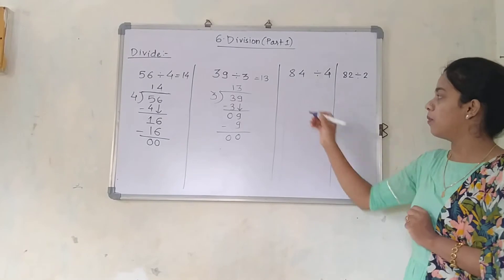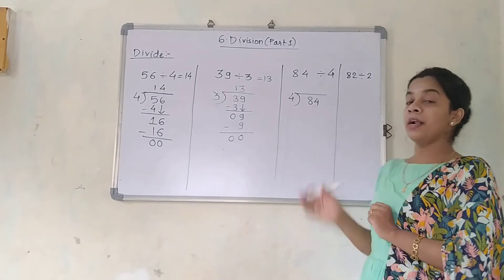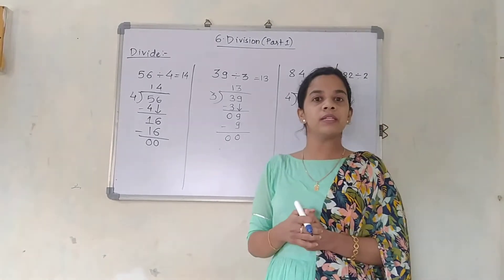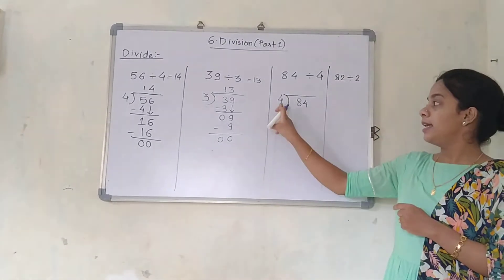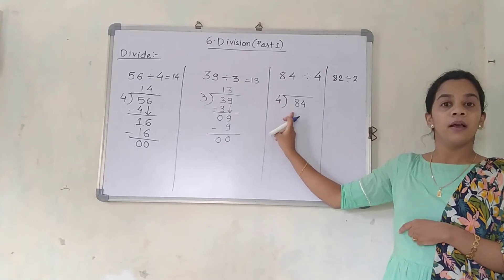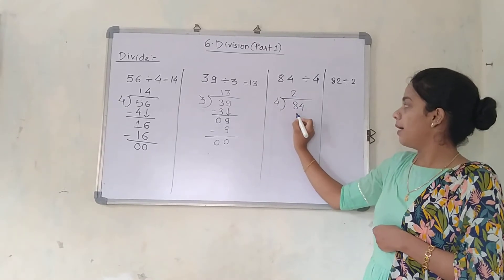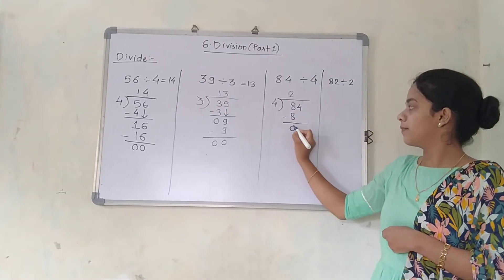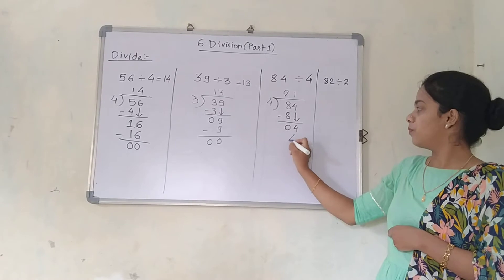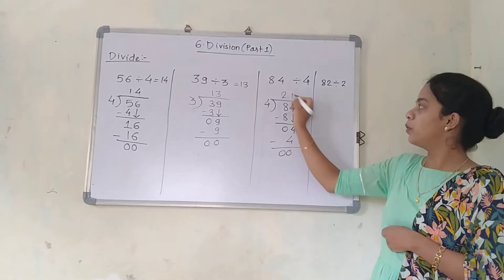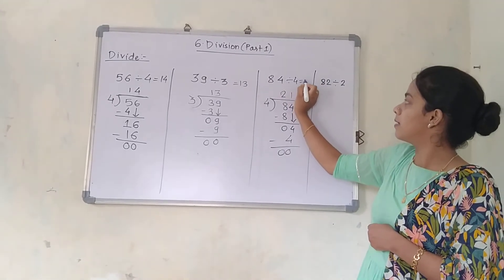The next question is 84 divided by 4. I am going to write 4 here and 84 here. This number 84 is bigger than 4 tens are 40, so we will do the same method — hold only the first number, which is 8. 4 twos are 8, which is near to 8. 8 minus 8 is 0. We bring this 4 down. 4 ones are 4. So the answer is 21. 84 divided by 4 is 21.